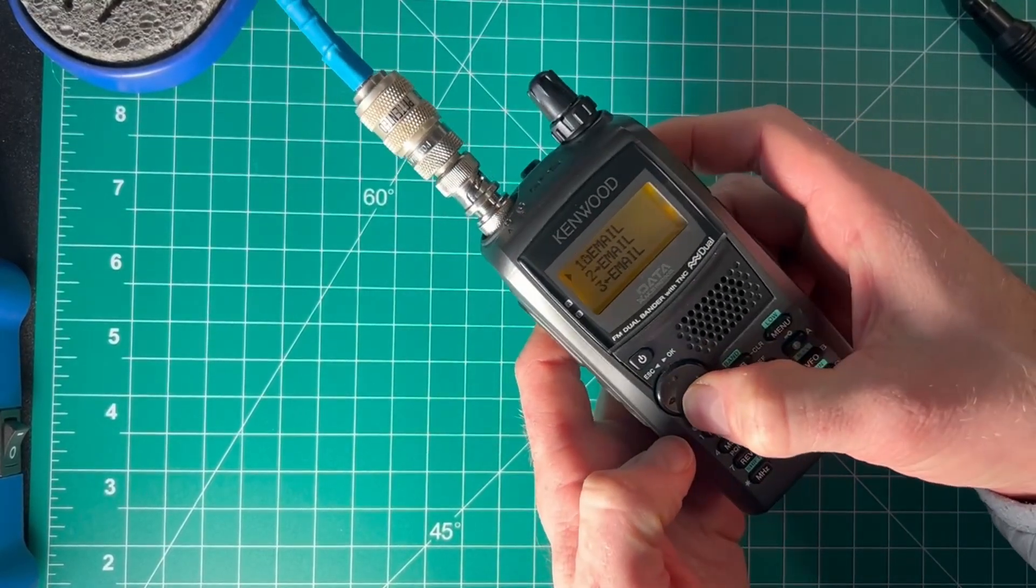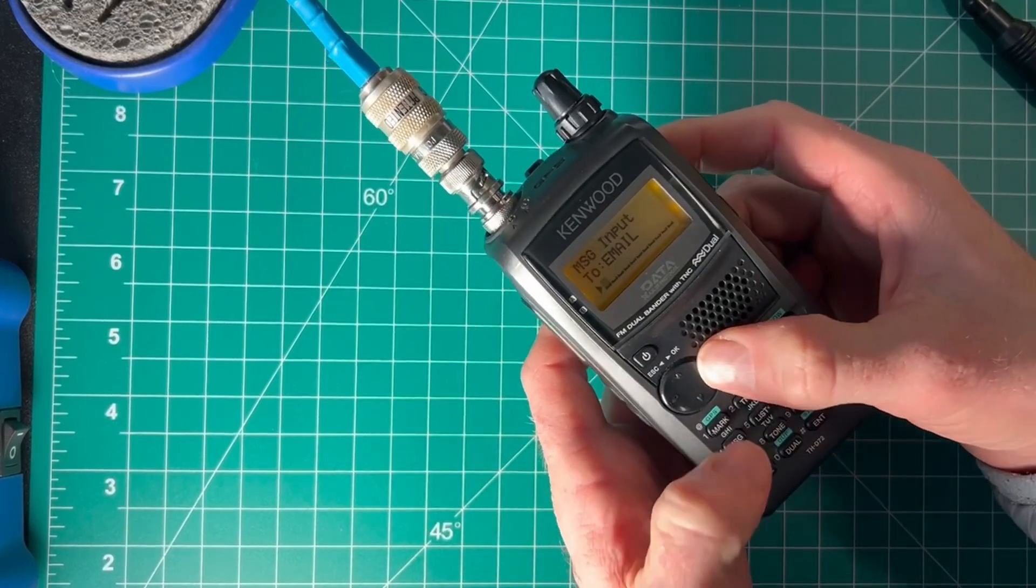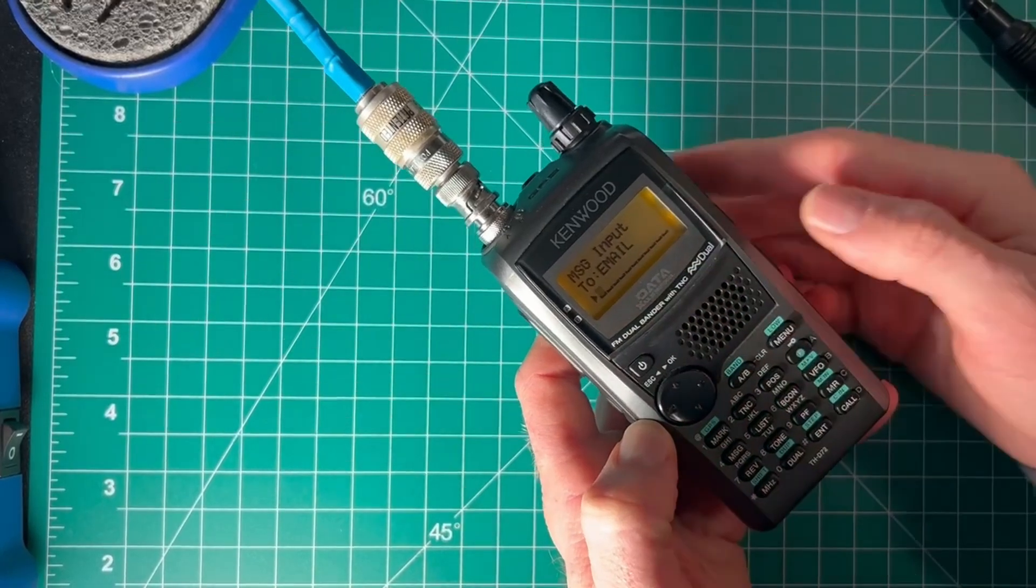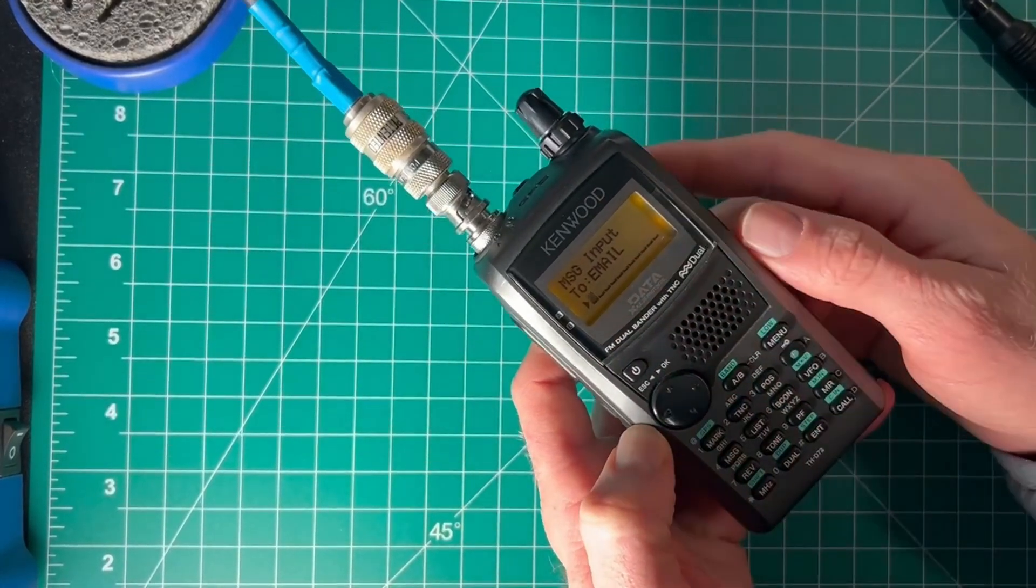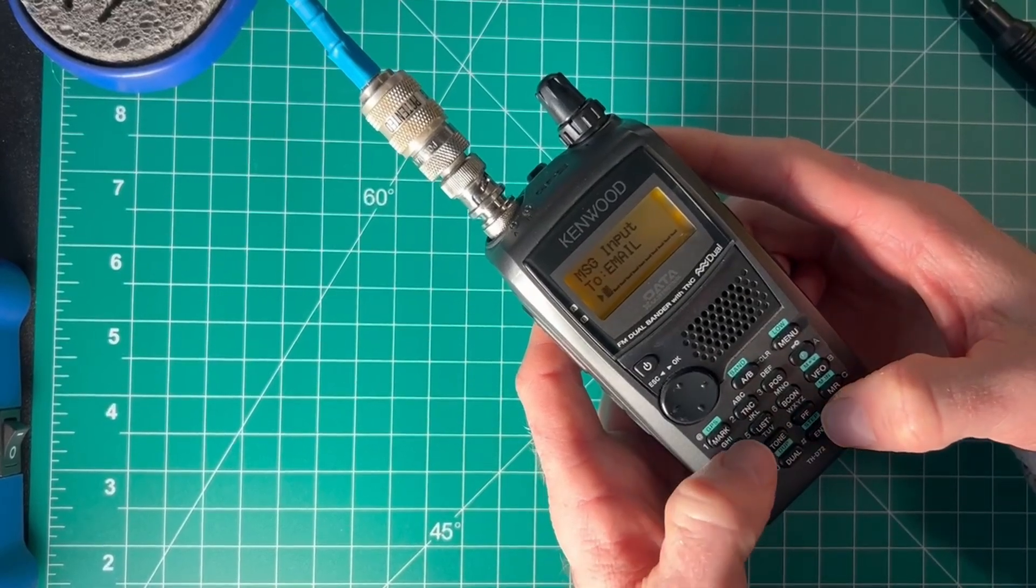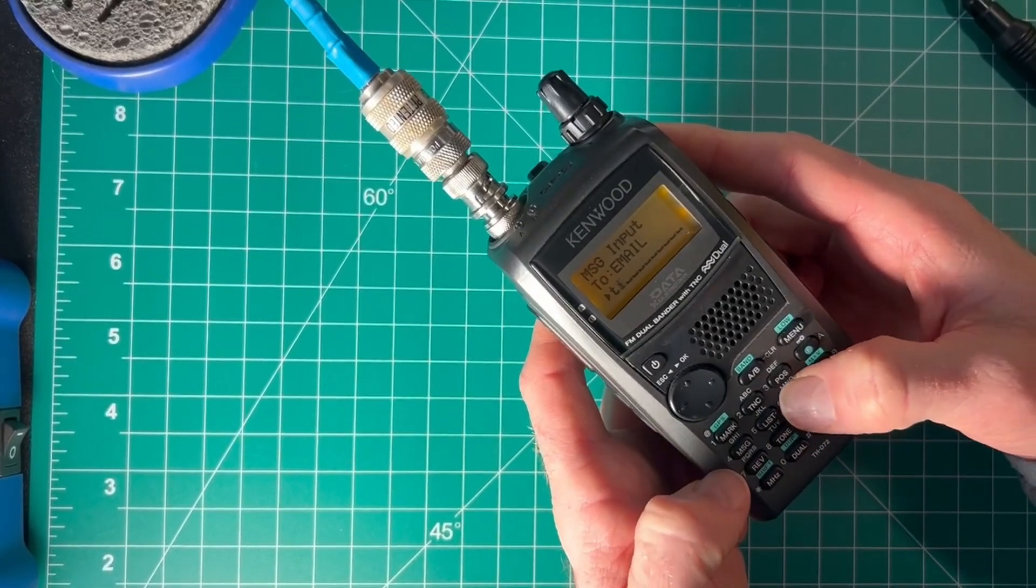And I actually have an email set up, all ready to go, so we're going to do email. That's who we're sending the APRS message to, and then I'm going to go ahead and type in my ham radio email address.